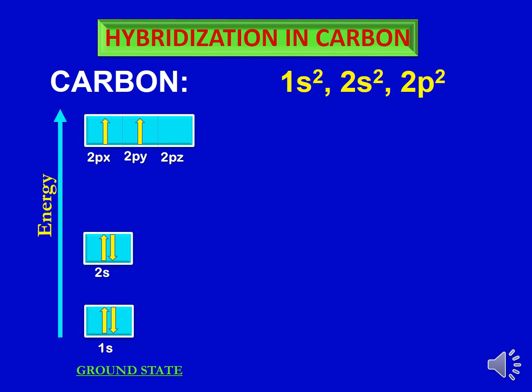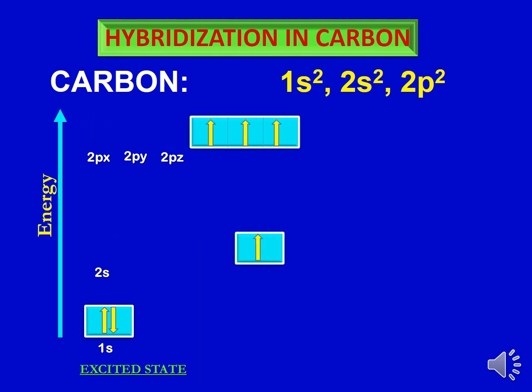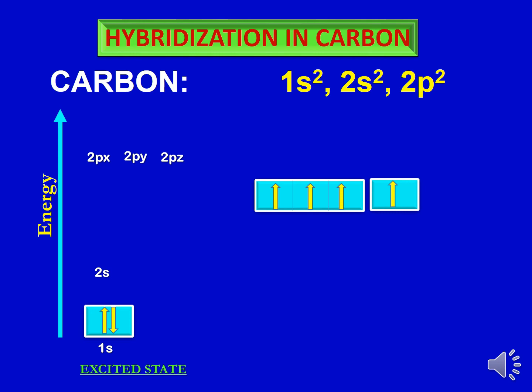This is the ground state electronic configuration of carbon, but when it is going to form a bond it gets excited, and during that process one electron jumps from the 2s orbital into the 2p orbital. In the excited state, carbon has four unpaired electrons and can form four bonds. In the excited state, the orbitals mix together to form new orbitals called hybridized orbitals. Any number of the 2p orbitals combine with the 2s orbital to form hybridized orbitals with different shapes and energies, and these hybridized orbitals are then involved in bonding.